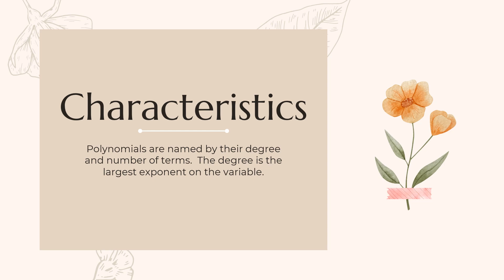We always look at the characteristics of polynomials. We name them by their degree and their number of terms. When we called something a trinomial during trinomial factoring, it was because it had three terms. The degree of the polynomial is that highest exponent, and that's how we name it — along with the number of terms.